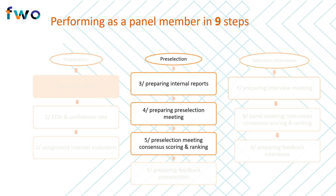During step 5, the pre-selection meeting itself, the panel has the opportunity to determine a panel score for each application, taking the individual reviews into account. On the basis of the panel score, a new ranking reflecting the relative comparative quality of the proposals is made. During this step the panel decides which candidates will be retained for the interview. After step 5, feedback reports will be written for all candidates who are not selected for interview. This is done by the panel member who was assigned this task at the beginning of the review process.